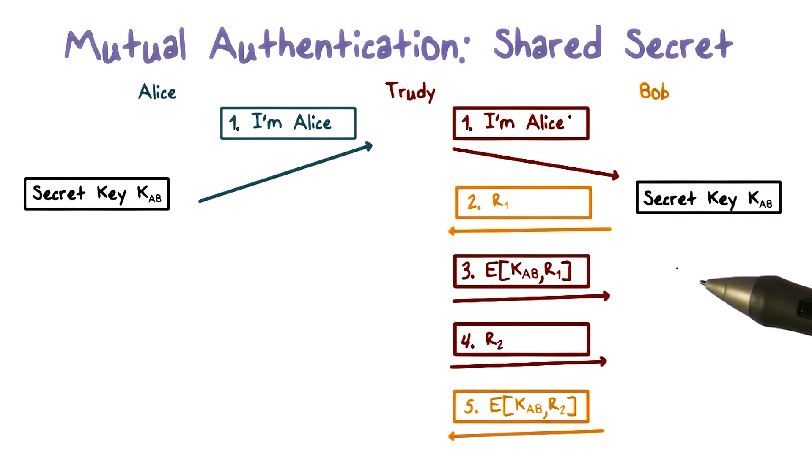As another example, suppose the challenges always increase in values. Then Trudy can first impersonate Bob and send a large challenge, say R1 equal to 1,000, and record the response from Alice. Meanwhile, the real Bob is using a smaller R1, say R1 equal to 950. Then Trudy can impersonate Alice sometime in the future, when the real Bob finally sends R1 equal to 1,000.